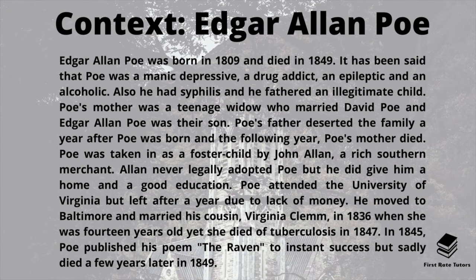He later moved to Baltimore and married his cousin Virginia Clem in 1836 when she was just 14 years old, yet she died of tuberculosis in 1847. In 1845 Poe published his poem The Raven, which became instantly successful. However, he sadly died just a few years later in 1849, just as he was gaining fame and notoriety.